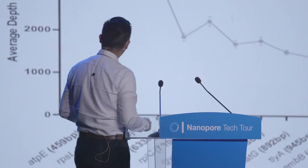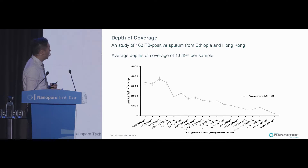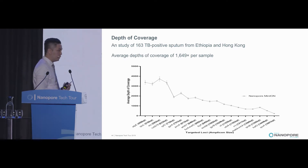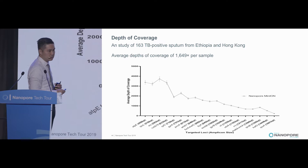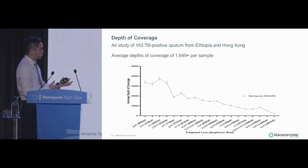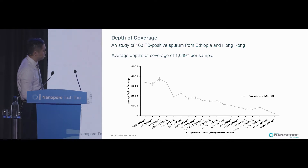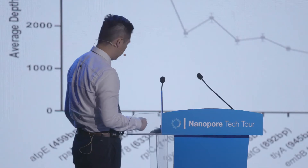Here are the results. We have analyzed 163 TB-positive sputum samples, collected not only from Hong Kong but also from Ethiopia, as we have a collaboration in Africa. On average, we have a depth of coverage around 1,600. We do observe that nanopore tends to sequence shorter amplicons more efficiently, so depth of coverage decreases as amplicon size increases — but it is still good enough to make clinical decisions.